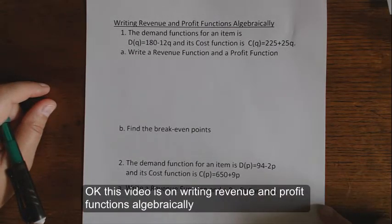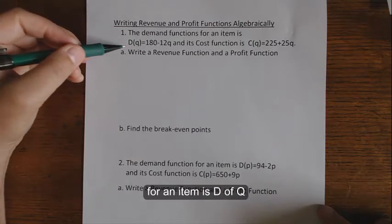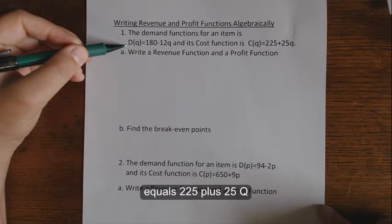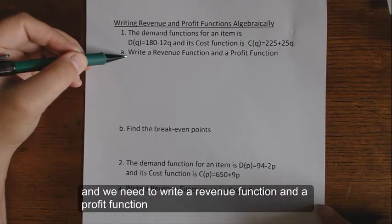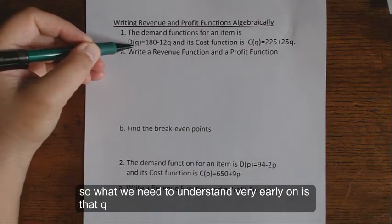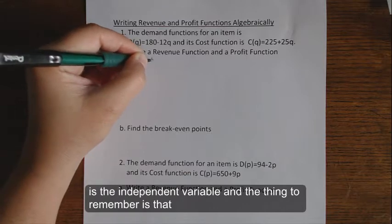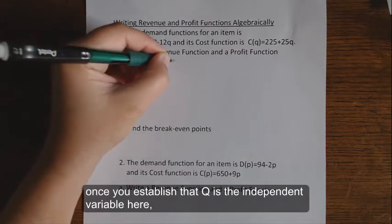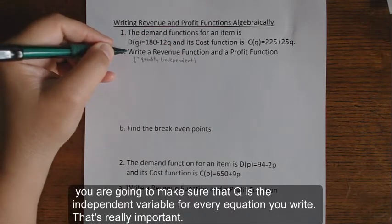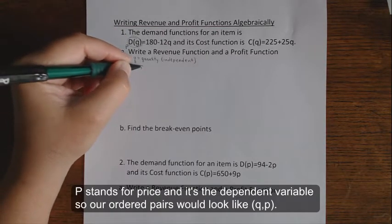This video is on writing revenue and profit functions algebraically. The demand function for an item is D(Q) equals 180 minus 12Q, and its cost function is C(Q) equals 225 plus 25Q. We need to understand that Q, which stands for quantity, is the independent variable, and P, which stands for price, is the dependent variable. So our ordered pairs look like (Q, P).